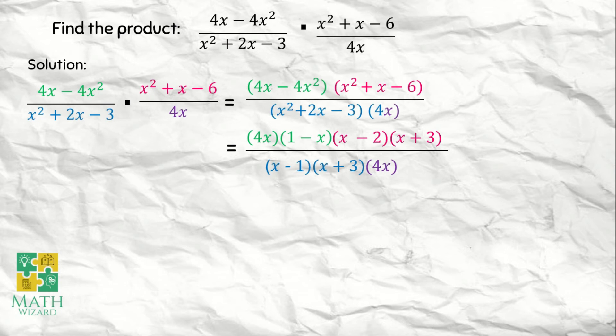Next, we cancel out the common factors between the denominator and the numerator. I see 4x and we have x plus 3. Are there any more common terms between the numerator and denominator? So far, there are none. We copy the remaining. For the numerator, what remains after we cancel out is 1 minus x times the quantity of x minus 2 over x minus 1 in the denominator.